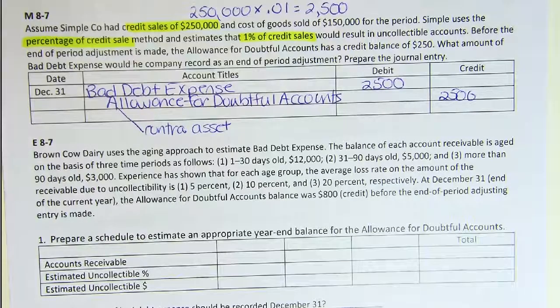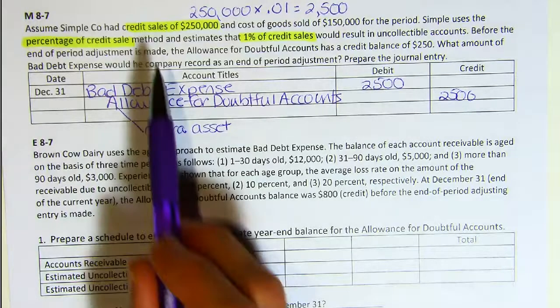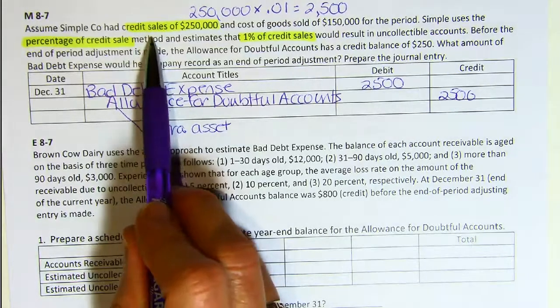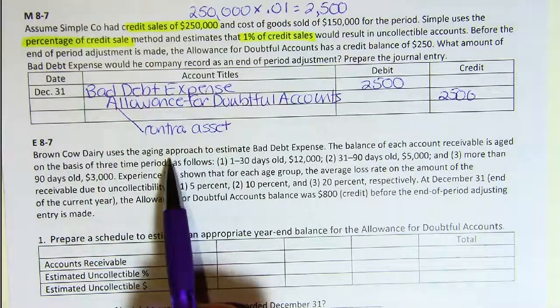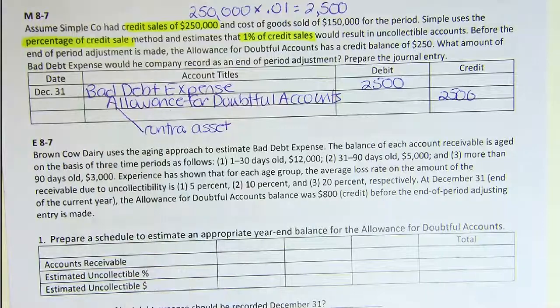So we got a little practice with the percent of credit sales method. Now let's take a look at the aging approach. This is the second way that we can estimate bad debt expense.